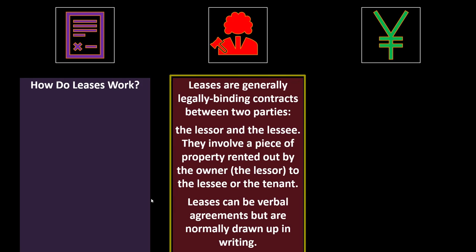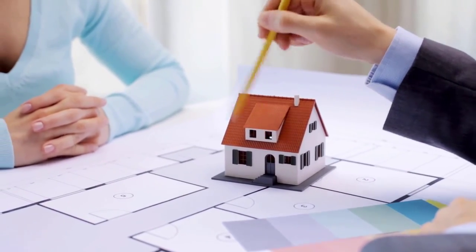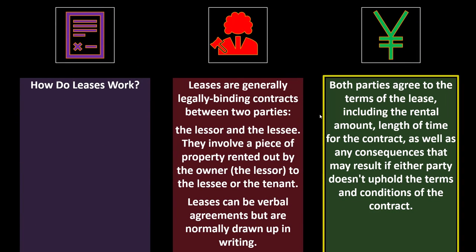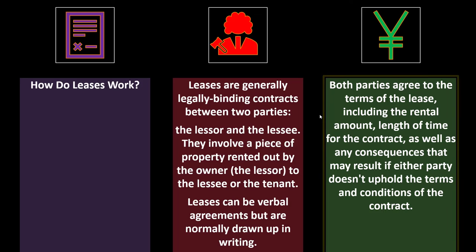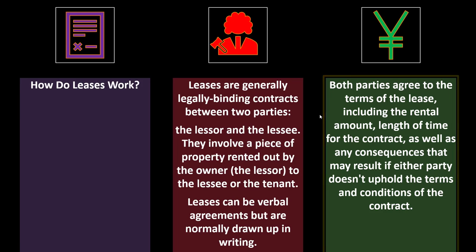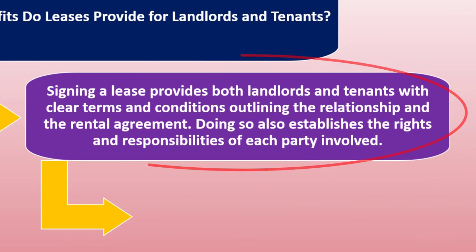How do leases work? Leases are generally legally binding contracts between two parties — the lessor and the lessee — involving a piece of property rented out by the owner to the tenant. Leases can be verbal agreements but are normally drawn up in writing. Both parties agree to the terms, including the rental amount, length of the contract, and any consequences that result if either party doesn't uphold the conditions.